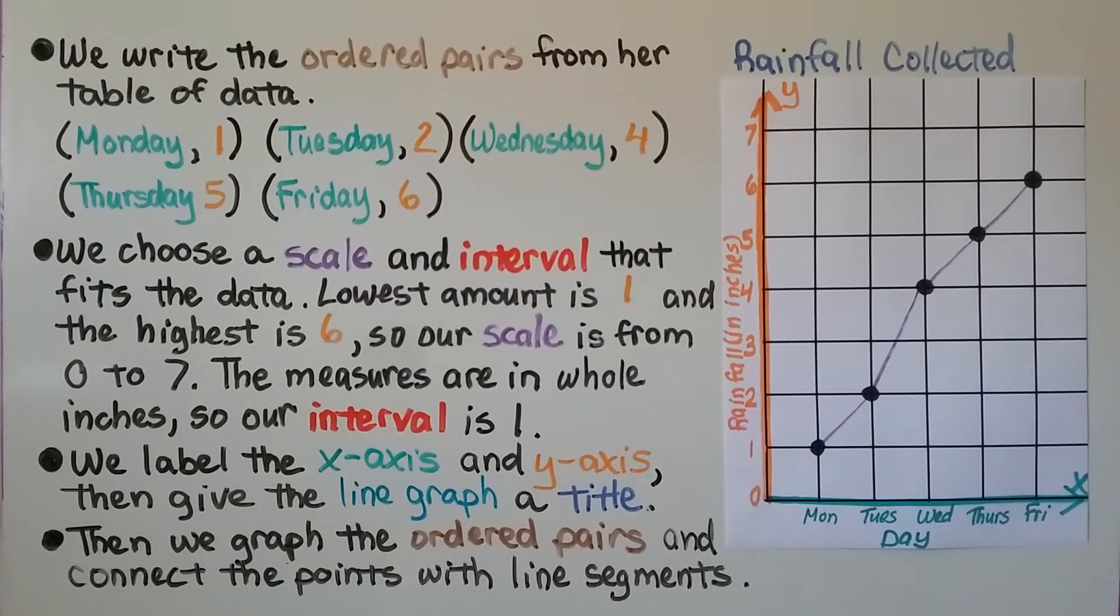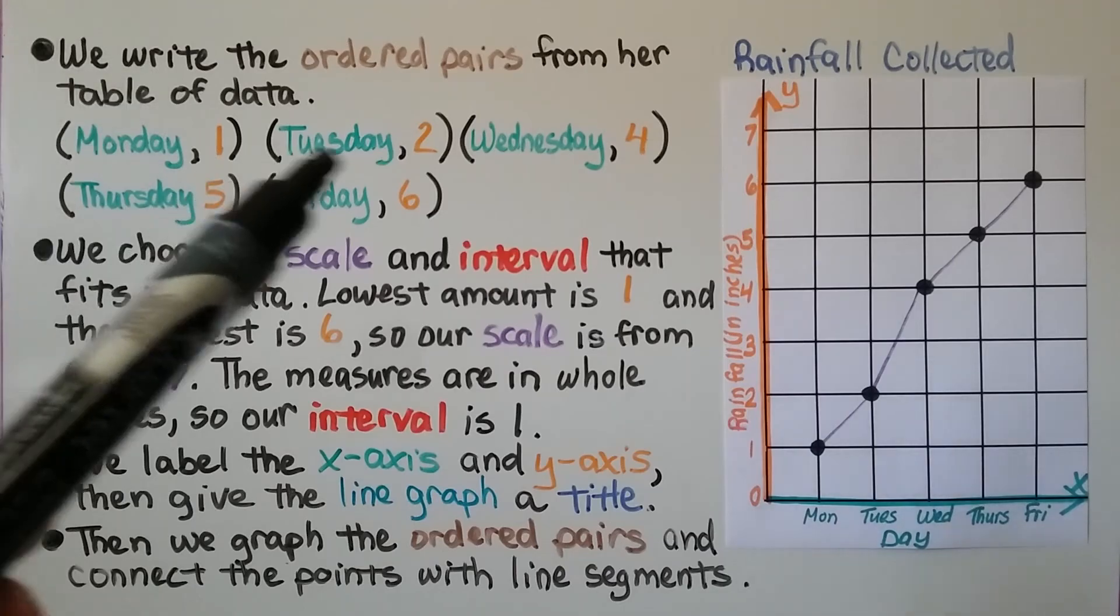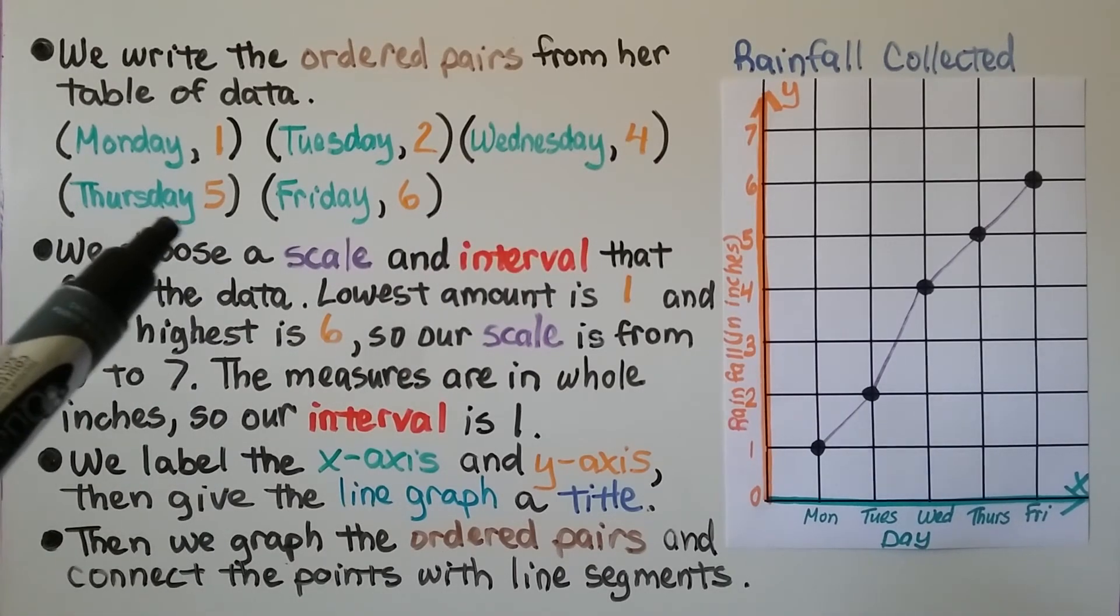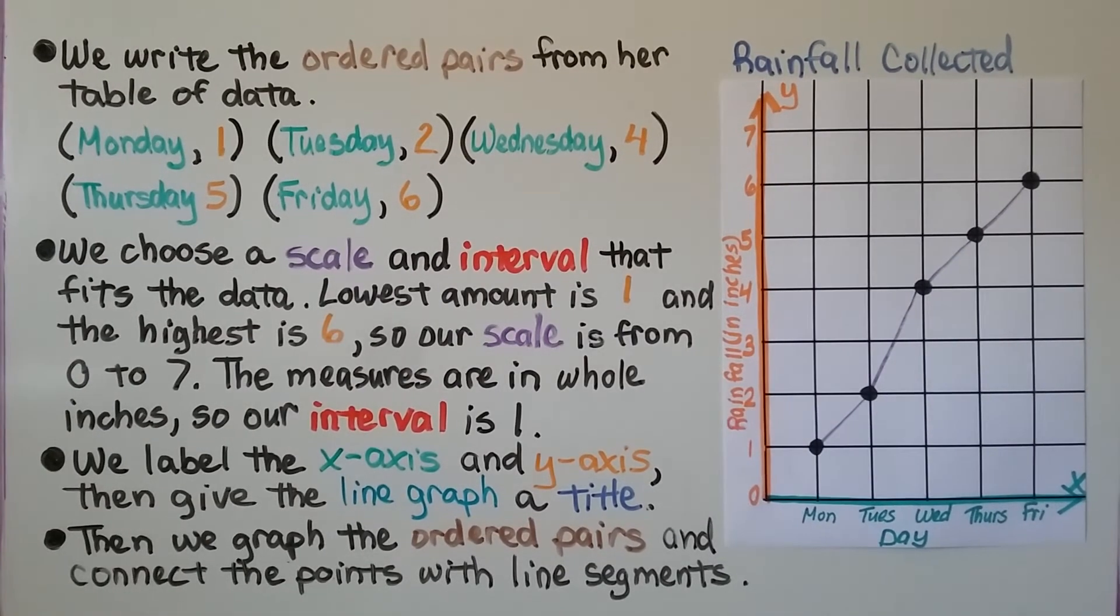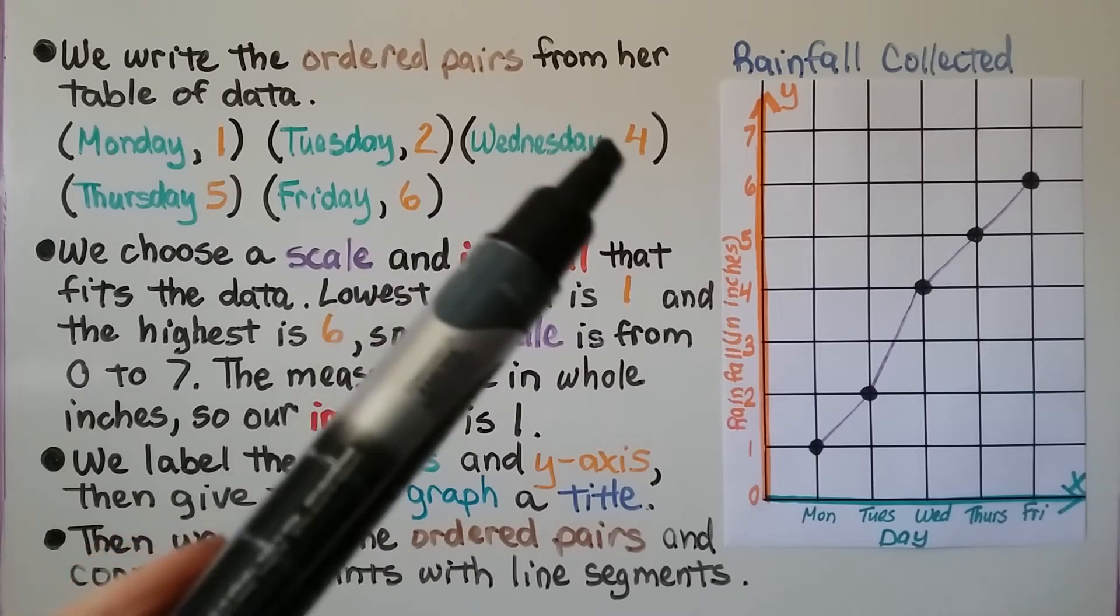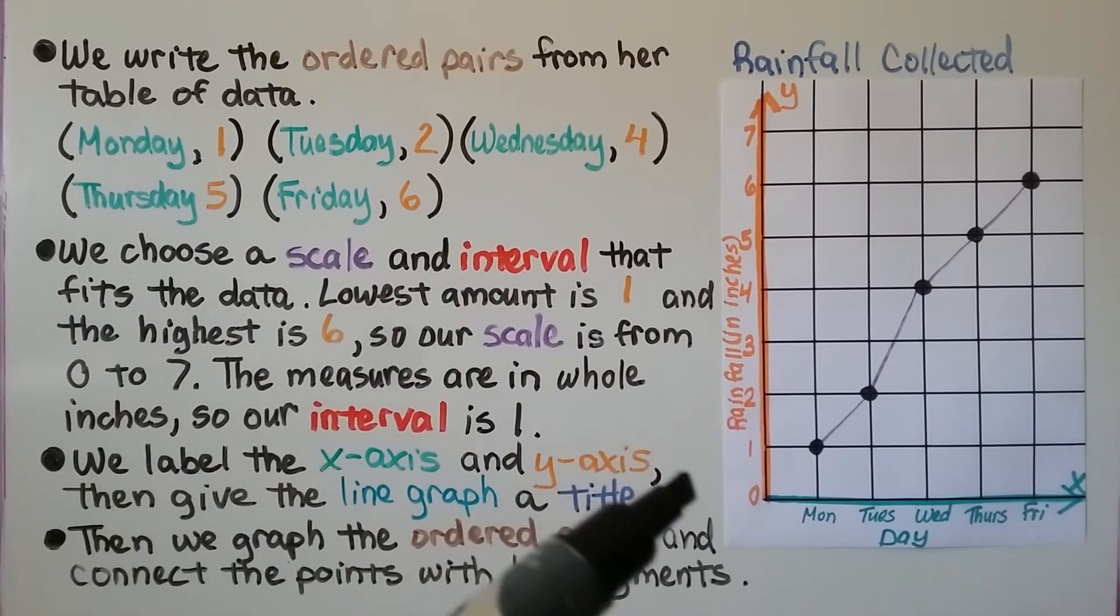We write the ordered pairs from her table of data. Monday was one, Tuesday is two, Wednesday is four, Thursday is five, Friday is six. We choose a scale and interval that fits the data. So because it's going one, two, and then four, five, six, we can have our rainfall in inches go zero, one, two...